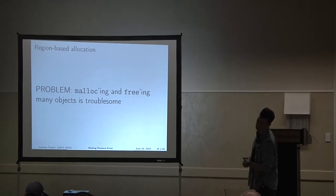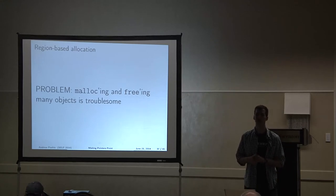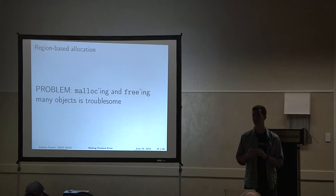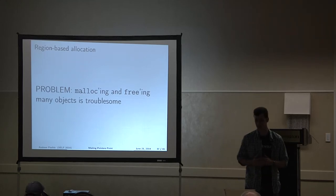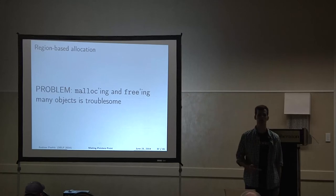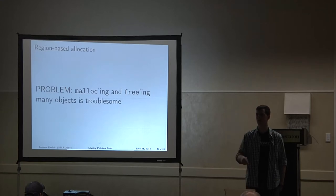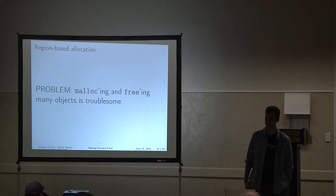Some people solve this problem by having a data structure that contains a list of pointers that have been allocated, associated with this object. In the case of the Apache Portable Runtime Library, which the Apache web server uses heavily, this is called a memory pool. You just go and make a pool, allocate stuff to the pool, and when you're done with the pool, you call a function on the pool that frees all the memory associated with the pool, and then destroys the pool. It's nice and simple and gets the job done.